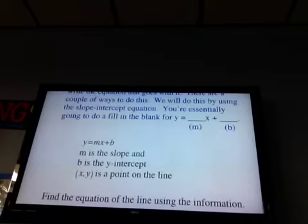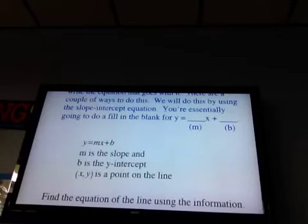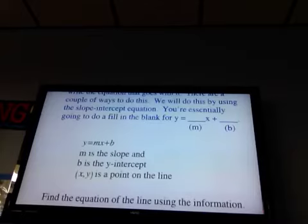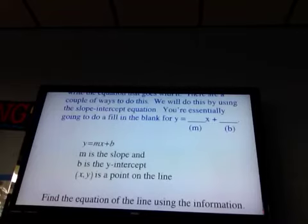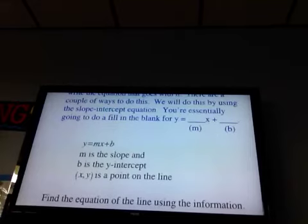But that x and that y that are in that equation, a line has lots of those because a line has lots of points. And that x, y represents all of the points on the line. So there's several of those. So we're going to use that equation to help us find our b, our missing piece, one of our missing pieces.